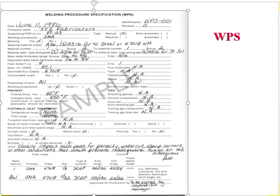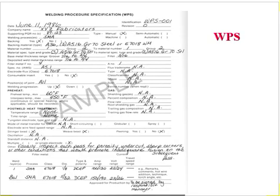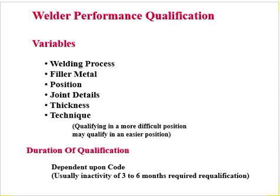This is the WPS format. You can see here: welding process, preheat, postweld heat treatment, and welder performance qualification variables. In the WPS format you must mention: welding process, filler metal, position, joint detail, thickness, and technique — and which WPS you are using for this particular welder qualification. Qualification in a more difficult position may qualify a welder in an easier position as well, depending on the code.